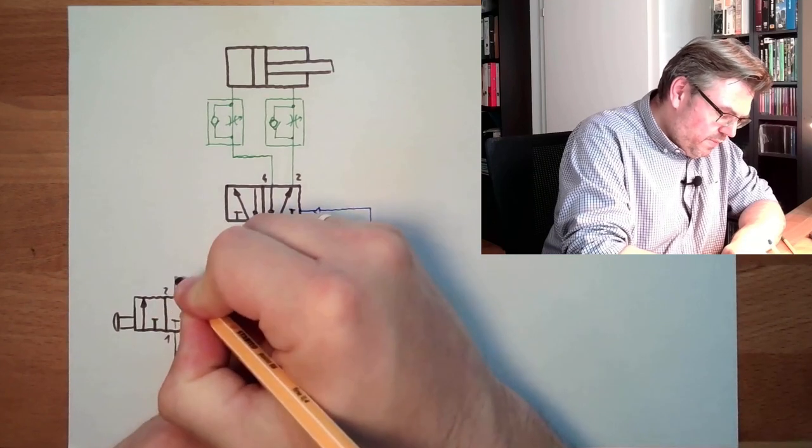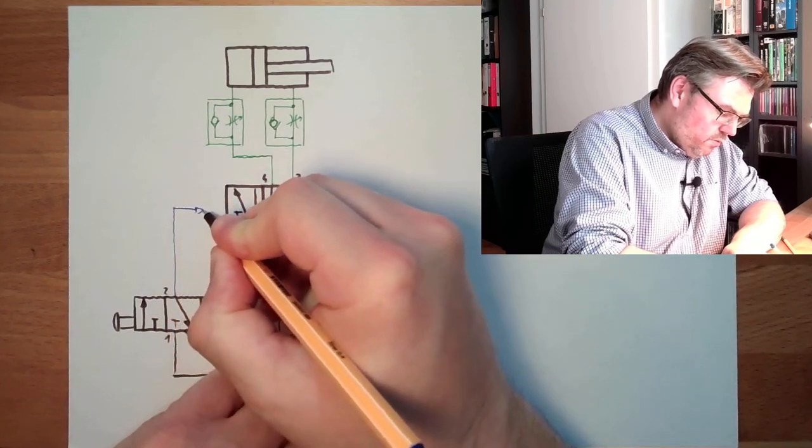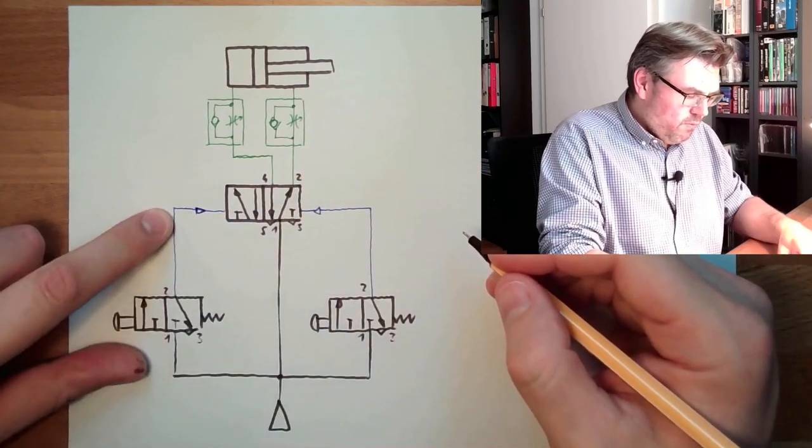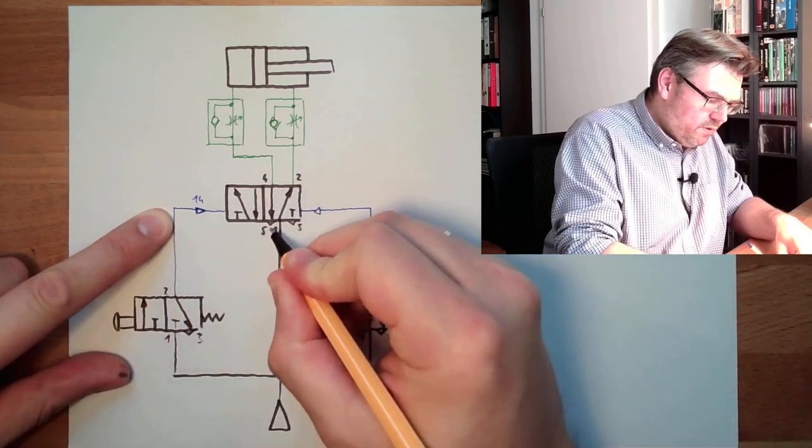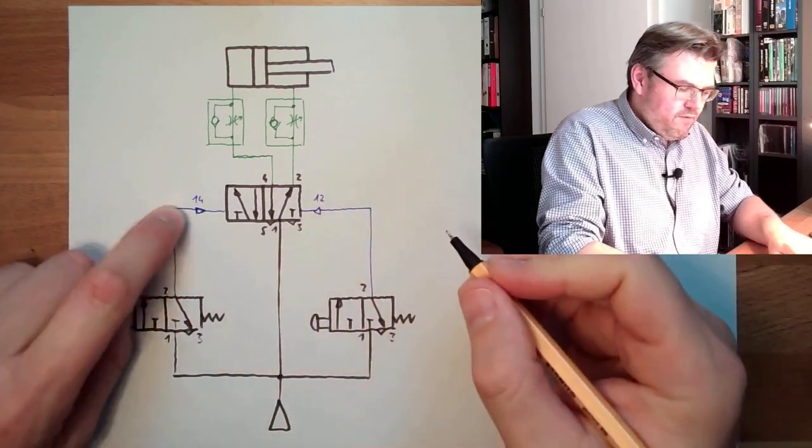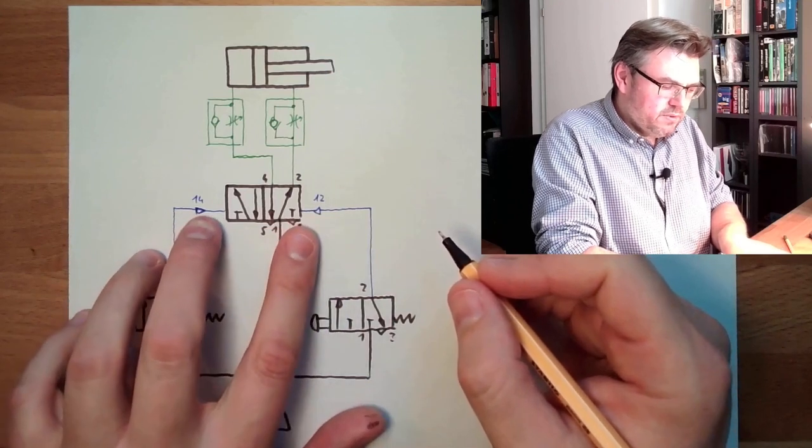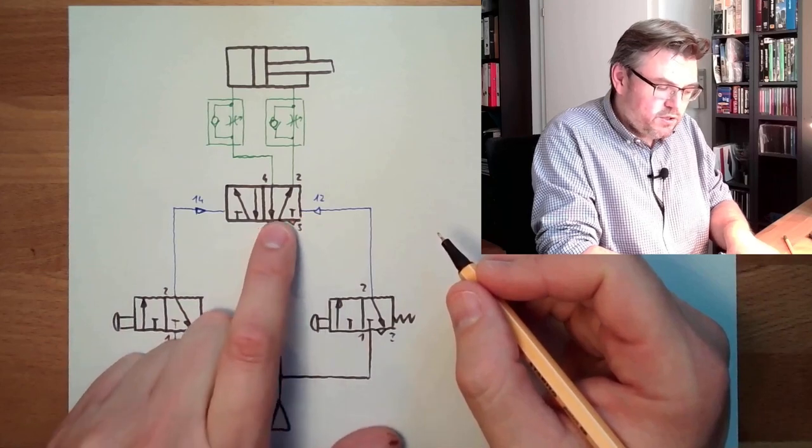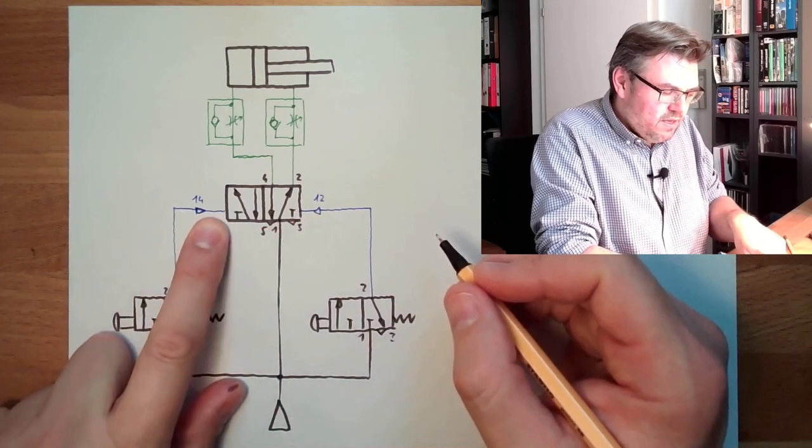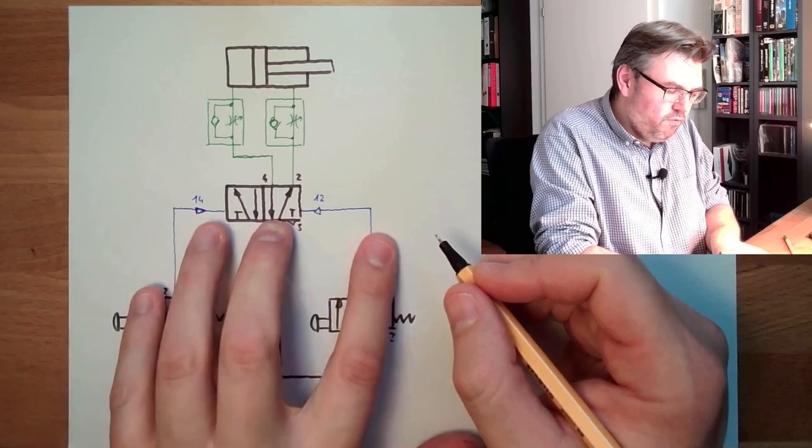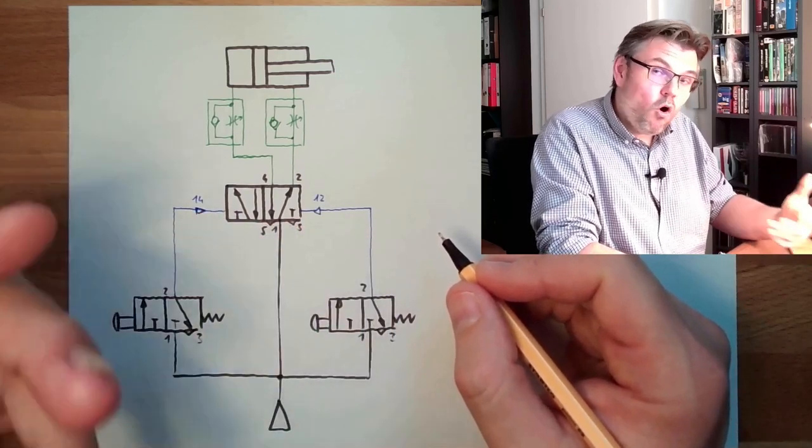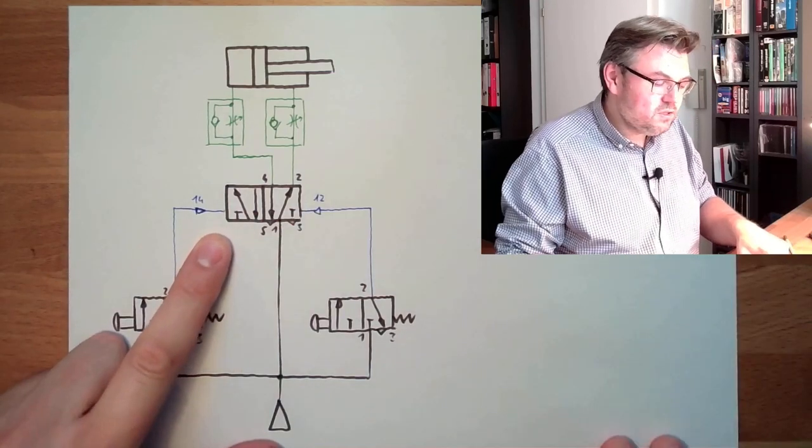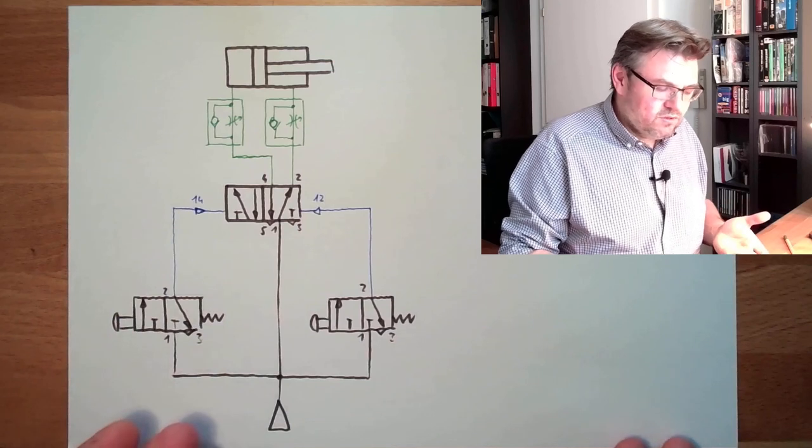And we simply use this impulse valve. Here we have the 1-4 line, here we have the 1-2 line. If we get a short impulse on the 1-2 line, it will switch to this position. And if the impulse is gone again, so if there is no pressure, it will stay where it is. Until we get here pressure, then it will move. And if the pressure then here is again gone, then it will stay there. It's an impulse valve. So it will store the last command. And actually, that's already it.